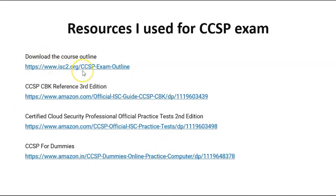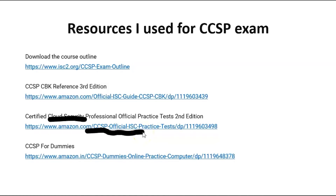There is an outline guide covered in the next slide. There is the CCSP CBK reference book — third edition — available on Amazon or as a PDF online. There is a practice exam set — only a second edition is released, but it helps a lot to understand how the CCSP exam is conducted. It has around six domain papers and two mega papers — around 1,000 questions. Completing those 1,000 questions twice will make it much easier to understand the pattern. Everyone must complete all six domain papers and two practice papers before sitting the CCSP exam.